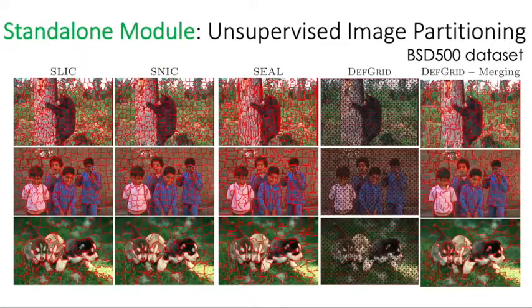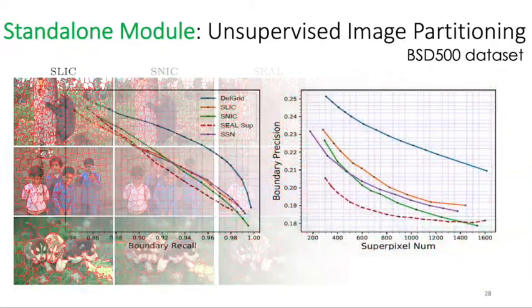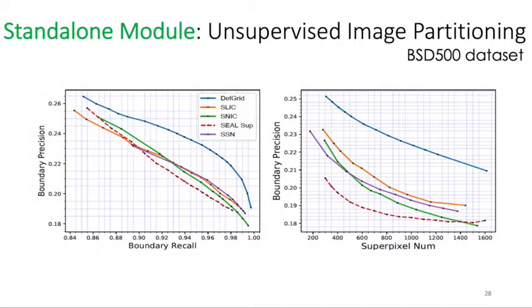To evaluate the grid itself for unsupervised image partitioning, we perform superpixel segmentation on BSD500 dataset, and compare with both traditional methods and deep learning-based methods. Our deformable grid aligns better with the edge. And quantitatively, we achieve higher boundary prediction than baselines.